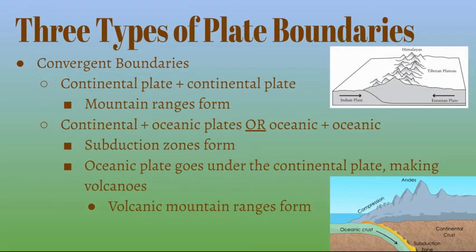The next type of plate boundary is a convergent boundary. A continental plate and a continental plate colliding can cause mountain ranges to form. A continental and oceanic plate, or an oceanic and oceanic plate colliding, can cause subduction zones to form, where the oceanic plate goes under the continental plate, making volcanoes.